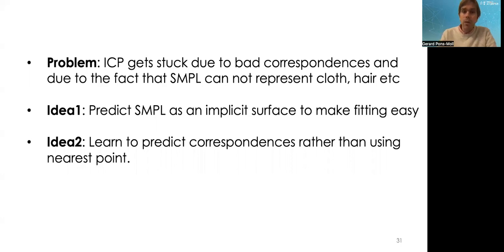In IP-Net, there's two key ideas. One is to predict SMPL as an implicit surface to make fitting easy. It's sort of going the other way. You go from a clothed mesh into an undressed mesh, what we call the inner surface, such that this surface looks much more similar to the SMPL model than before. Essentially, now the fitting process will be easier because the implicit surface doesn't have clothing, doesn't have hair, doesn't have these difficulties, and then fitting will be easier. The second idea is to predict correspondences rather than using nearest points.